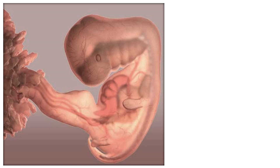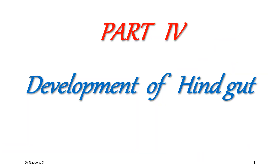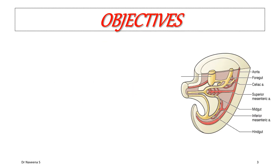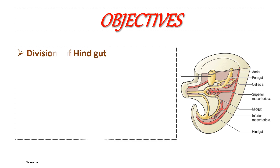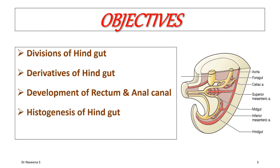Welcome back to the Embryology session on Development of Alimentary System. Here comes Part 4: Development of Hindgut. The objectives for this part include the divisions of hindgut, listing out all the derivatives of hindgut, focusing on development of Rectum and Anal Canal, Histogenesis of Hindgut Tube, and Congenital Anomalies.